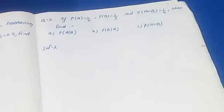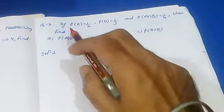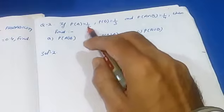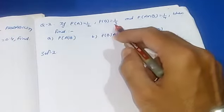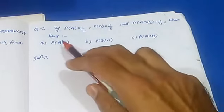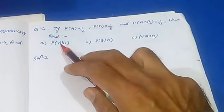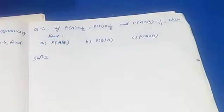In the last video, that is video 21 of probability, we solved the first sum based on conditional probability. Now we will see the second sum of conditional probability. If P of A is equal to 1 by 2, P of B equals 1 by 3, and P of A intersection B is equal to 1 by 4, then find probability of A given B, B given A, and probability of A union B.